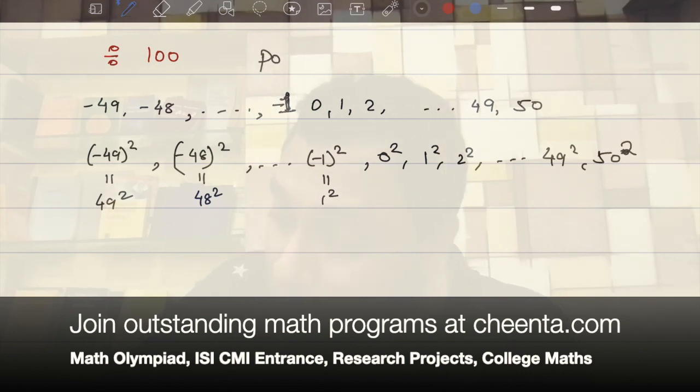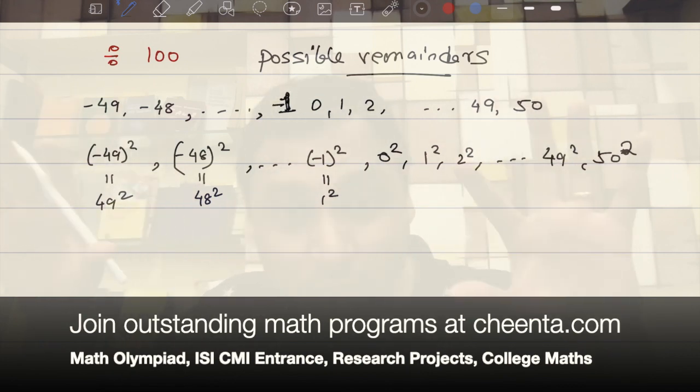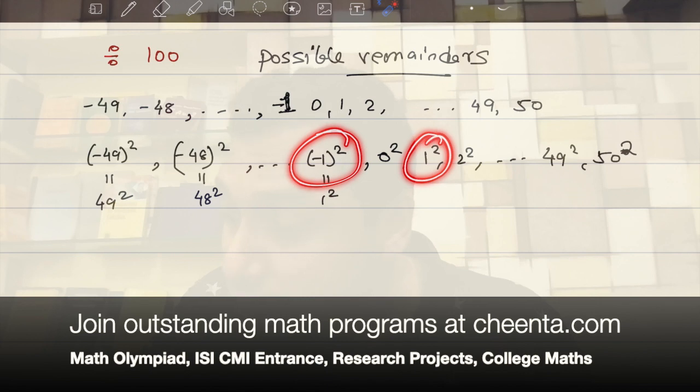So, to remind you, these are the possible remainders if you divide a number by 100, right? So, the question is, how many different squares do we have? How many different squared remainders do we have? Well, notice that this one and this one are same. This negative 48 squared and 48 squared will be same. Negative 1 squared and 1 squared will be same. So, we have a lot of remainders becoming the same.